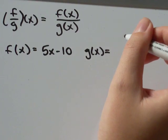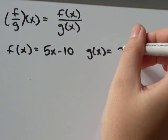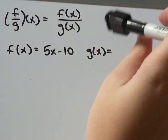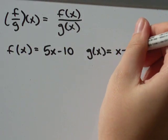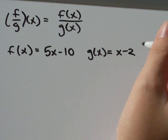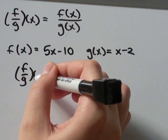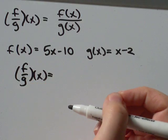So in this case, I've got f is 5x minus 10, and g is, can't talk and write at the same time, g is x minus 2. So all I'm going to do is find f of g of x, not as scary as it looks at all.